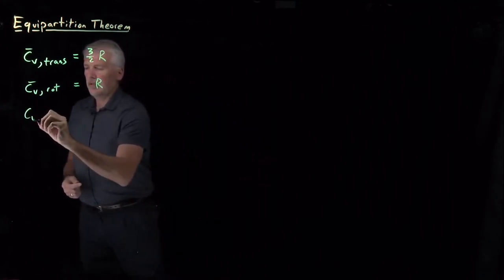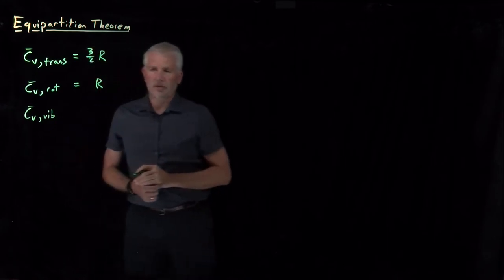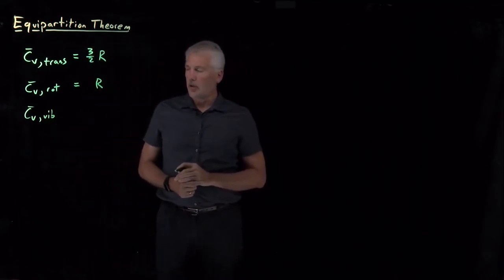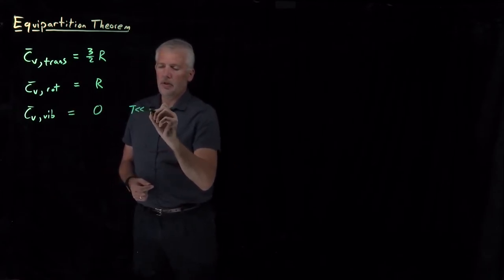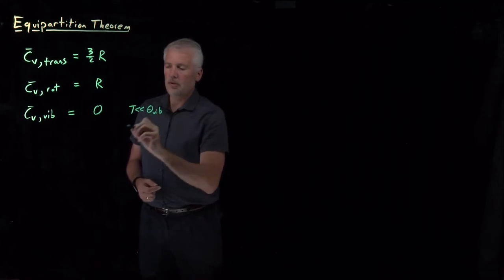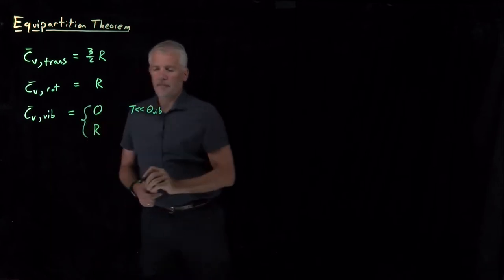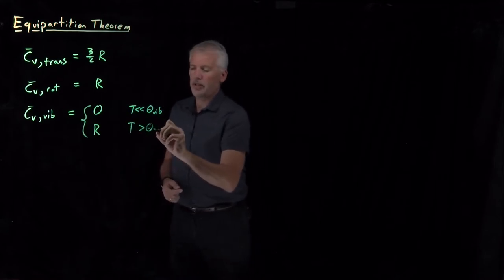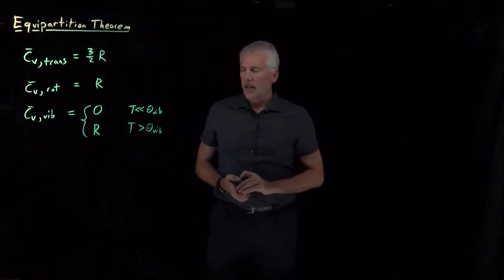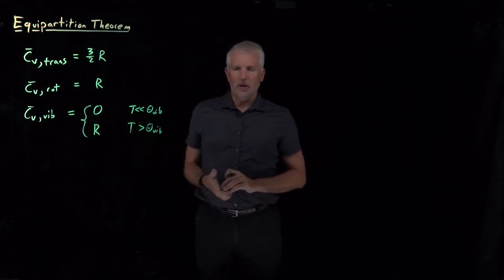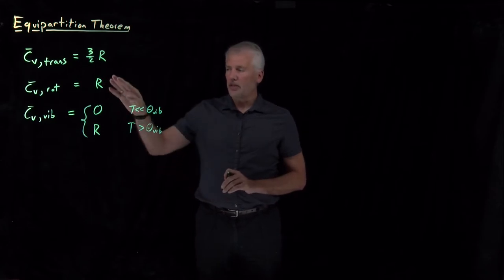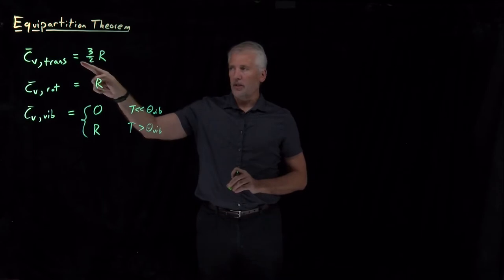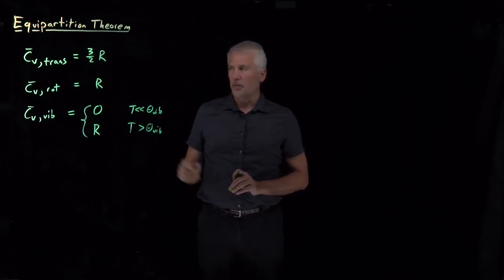Most recently, we've seen that the vibrational contribution to the constant volume heat capacity is either zero at temperatures that are cold compared to the vibrational temperature of the molecule, or perhaps R if we're at temperatures considerably larger than the vibrational temperature. In between, it makes a gradual transition from zero to R. Looking at these three heat capacities next to each other, each looks like a multiple of R, or a multiple of some ratio of small integers times R — some number of one-halves R.